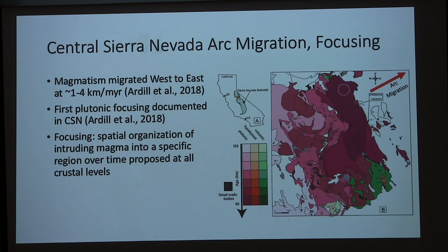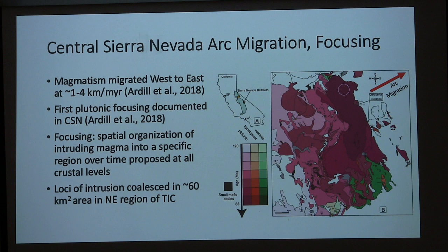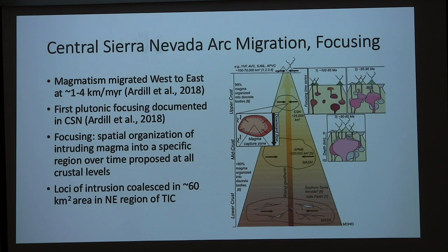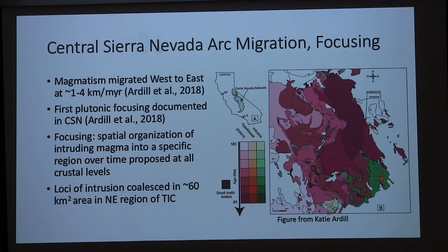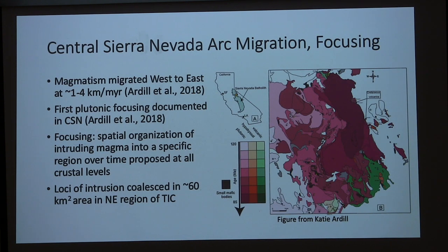This focusing represents the preferential organization of intruding magmas over time, with a specific region where the youngest rocks are found. Thinking about this in cross-section throughout the crust, Katie suggests there is incremental constriction of where magma is being emplaced. In the central Sierras we're looking at a slice through the upper crust, and above it presumably would have been a focused volcanic field. On this map, there's something that stands out — a set of bodies with a very dark color set against lighter color, indicating it is much younger than the surrounding rock. This is the Jackman Canyon intrusive suite. The map pattern suggests it's younging in a direction antithetical to the focusing and the west-to-east migration — so we have this curious system.